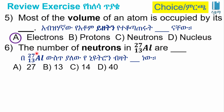The number of neutrons in Al, which means aluminum, is: A: 27. B: 30. C: 14. D: 40. Let's calculate the number of neutrons in aluminum.